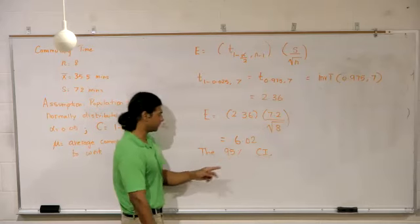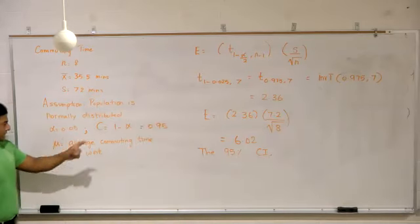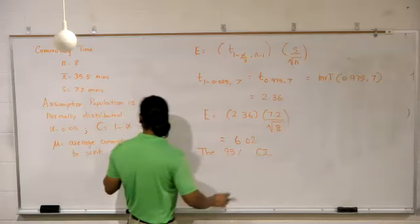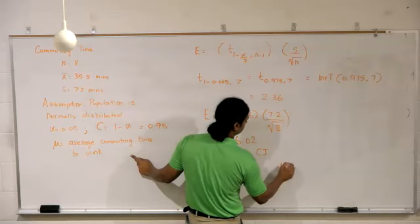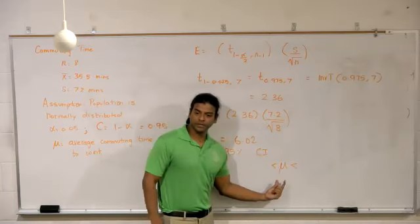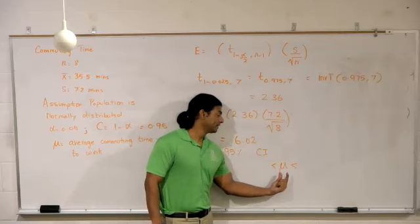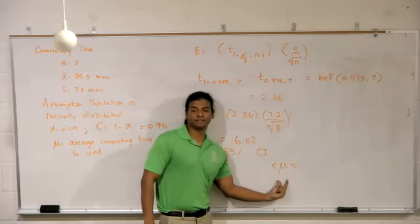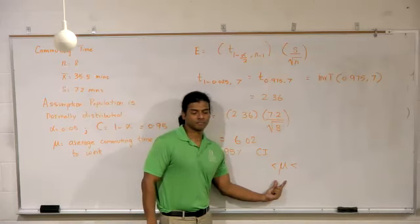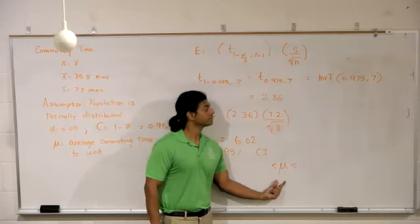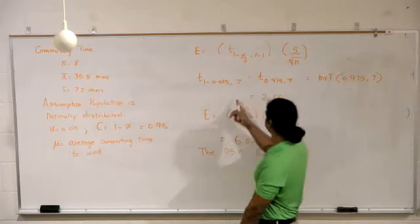CI stands for confidence interval. The 95% confidence interval for the average commuting time to work, which is mu. Student asks about the critical value: for alpha 0.05, we divide by 2 to get 0.025, so it would be 1 minus 0.025, which is 0.975.